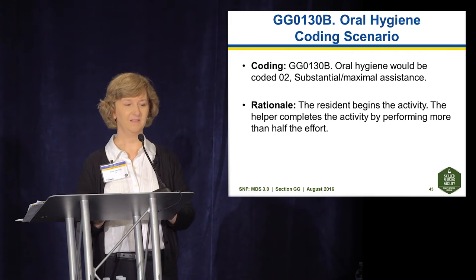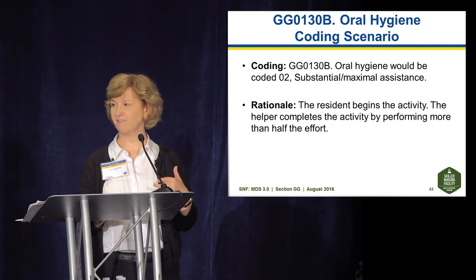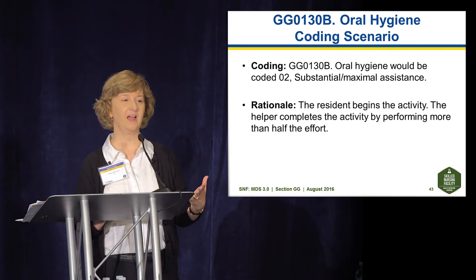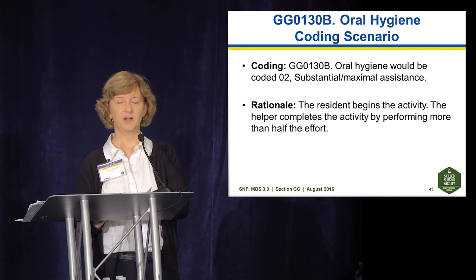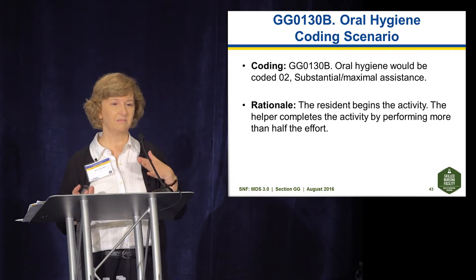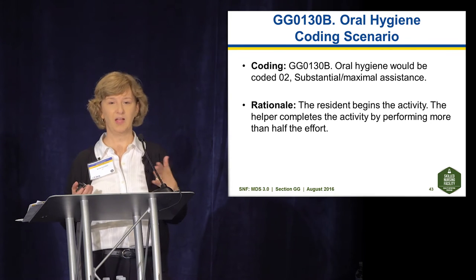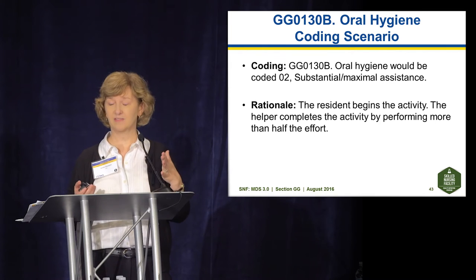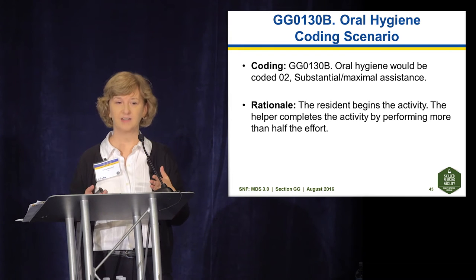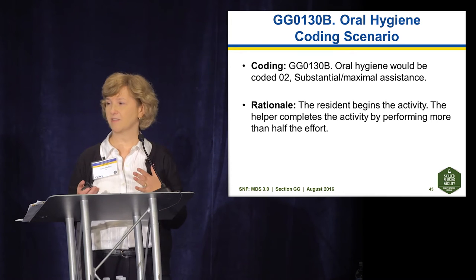Example: Mr. W is a resident who does not have teeth and his dentures no longer fit his gums. He begins brushing his upper gums after the helper applies toothpaste onto his toothbrush — opening toothpaste and applying it is an example of setup for oral hygiene. He brushes his upper gums but cannot finish due to fatigue. The helper completes the activity by brushing his back upper gums and all his lower gums. In this instance, the helper performed more than half of the effort — all the lower gums plus part of the upper gums — so oral hygiene is coded level 2.